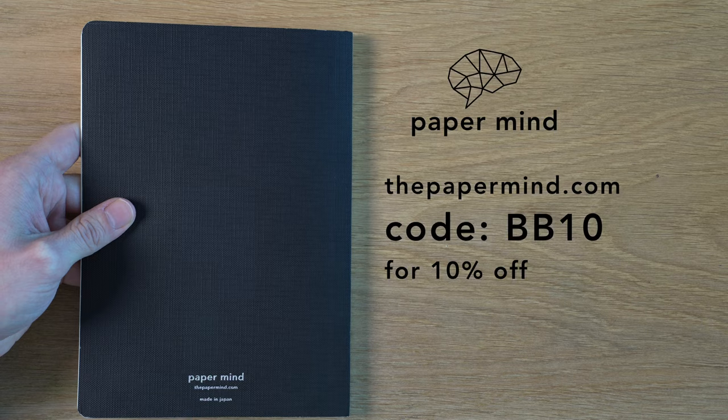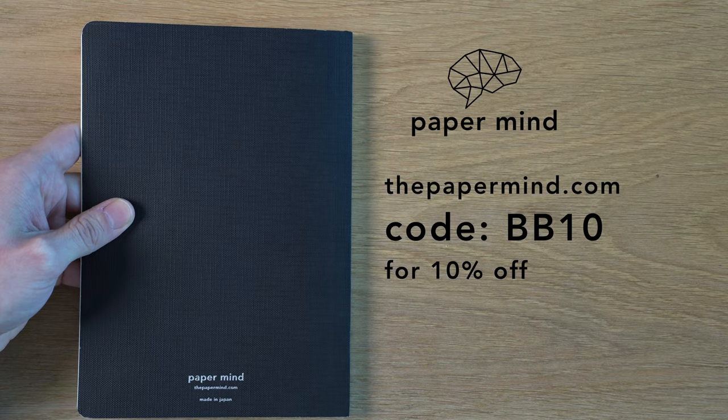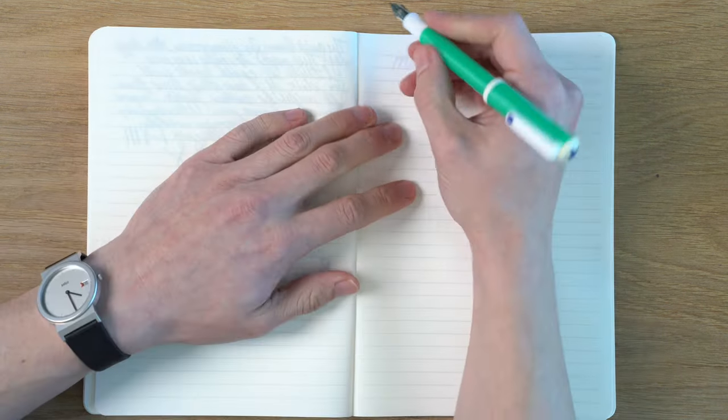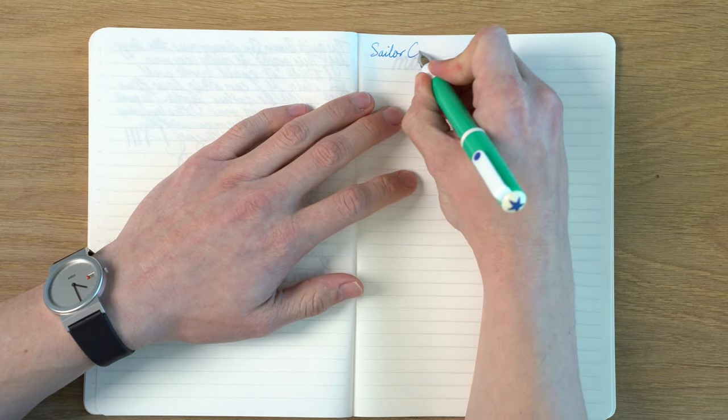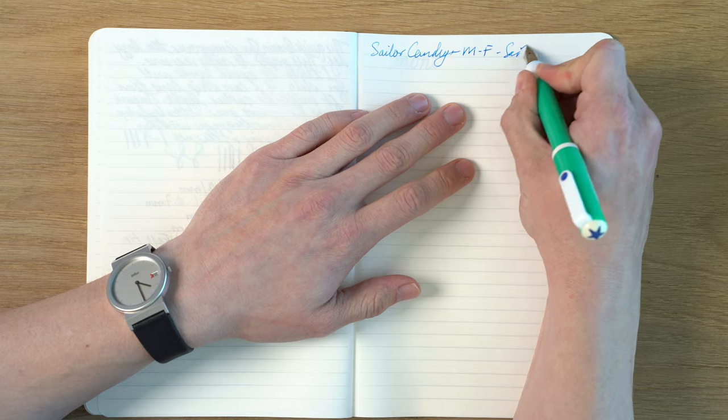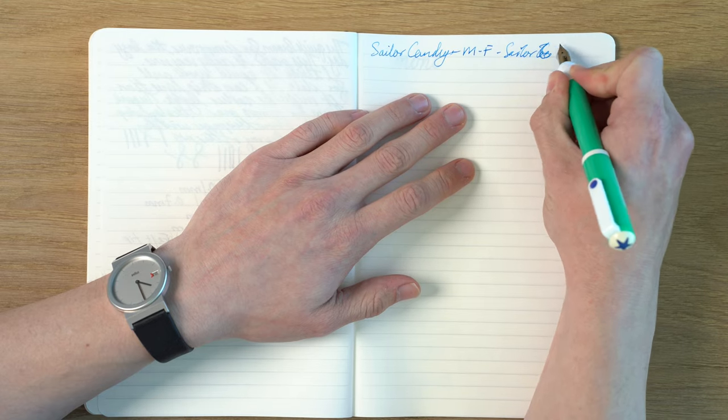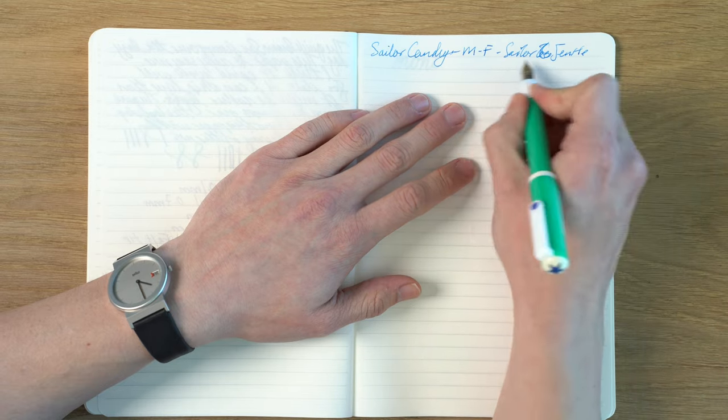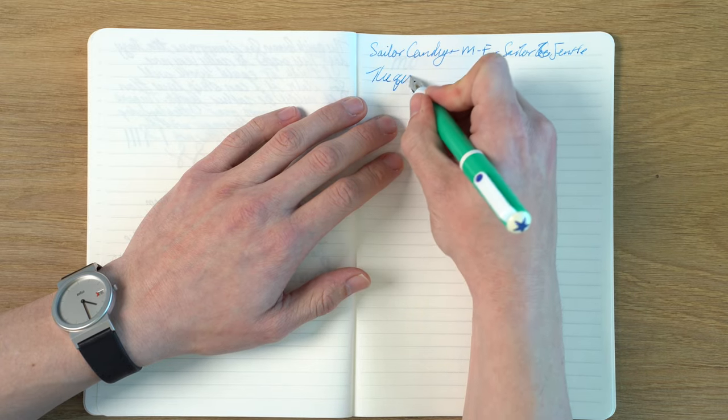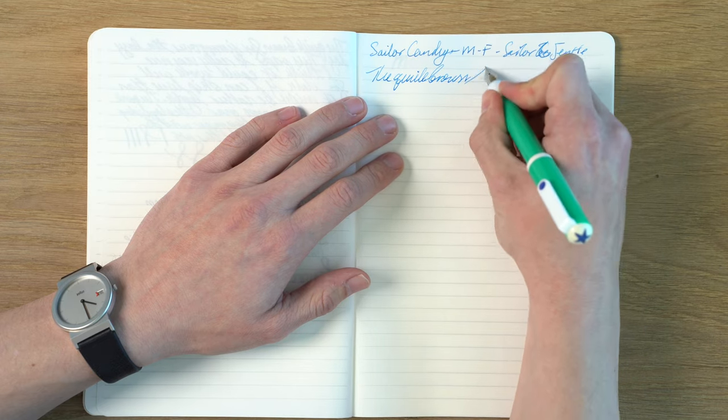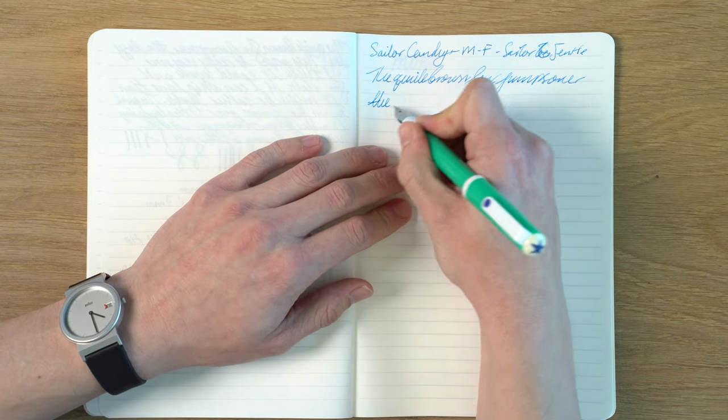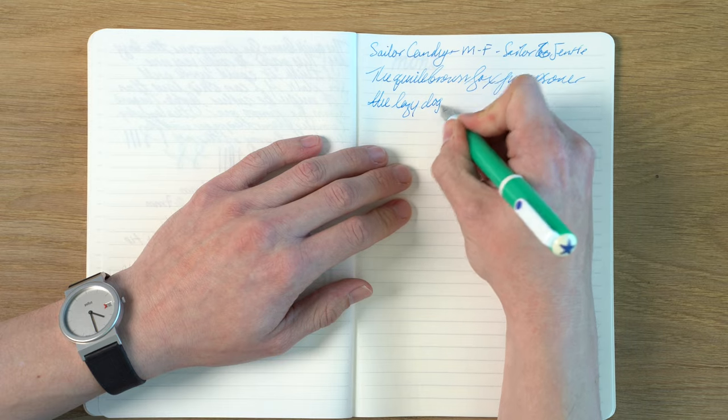We're going to be doing the writing sample today on the Paper Mind Mitsubishi Bank Paper Notebook. These are really great with fountain pens. And for Blake's broadcast viewers and subscribers, you can get 10% off with code BB10 at checkout. Okay, this is a Sailor Candy. And I believe they call this a medium fine. This is Sailor, I think it's Gentle, some kind of gentle blue. It's a really nice ink, but I think they discontinued it.